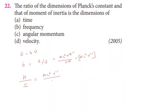Dividing by moment of inertia, whose dimension formula is ML². Then ML² cancels with ML², leaving T⁻¹. T⁻¹ equals 1/T, which equals frequency. So Planck's constant dimension divided by moment of inertia dimension equals frequency. The 22nd question answer is the second option.